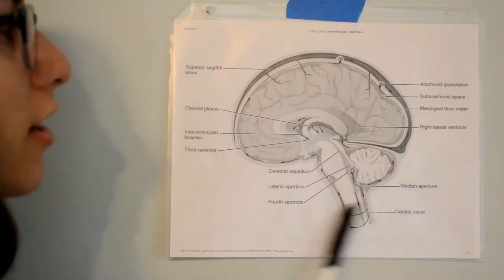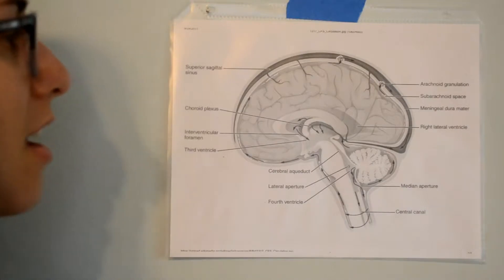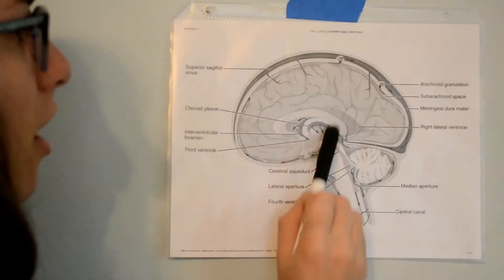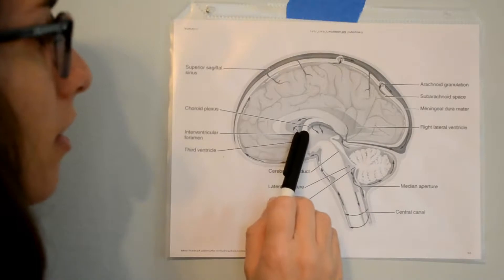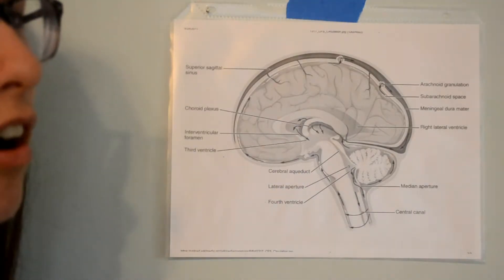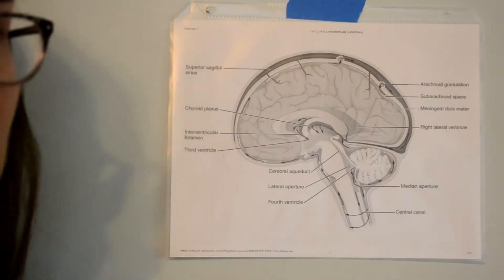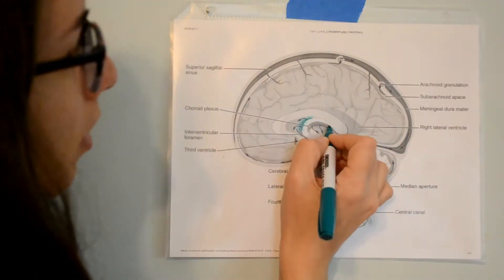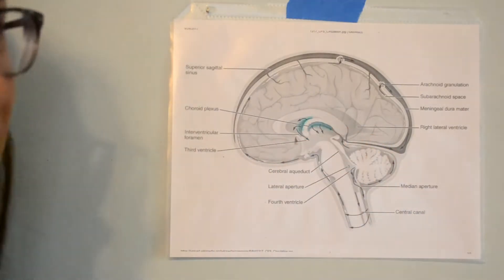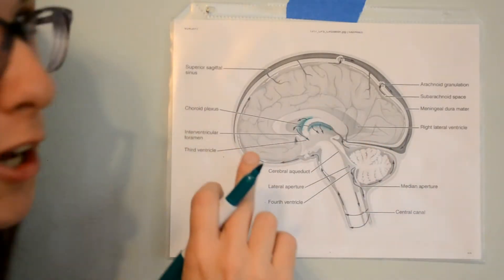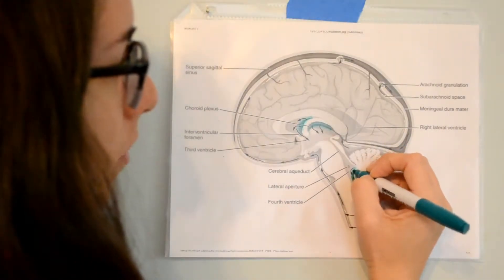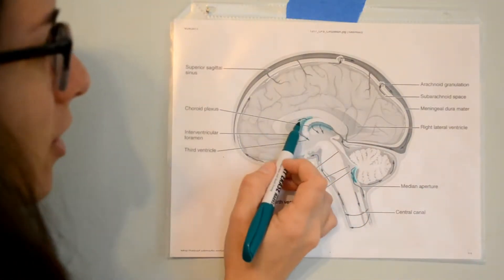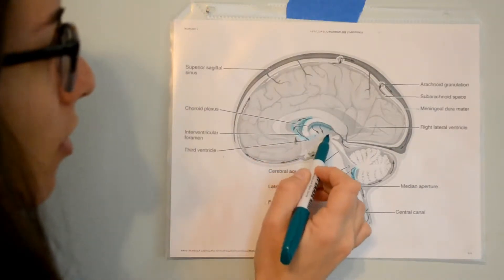Looking at a cross-section of the brain, we can start to see the anatomy and where the CSF flows. In the very center of the brain, we have our lateral ventricles — ventricles are essentially cavities within the brain, open spaces that the CSF flows through. The origin site where the CSF is secreted is the choroid plexus. There is also choroid plexus in the brain stem, located in the fourth ventricle. The CSF is secreted from there and moves down into the third ventricle, and then down again into the fourth ventricle.